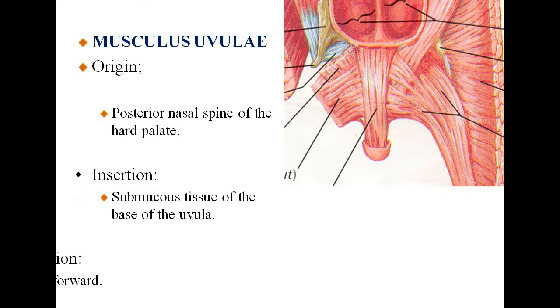Musculus uvulae arises from the posterior nasal spine of the hard palate. Insertion is into the submucous tissue of the base of the uvula. Its action is to pull the uvula forwards.